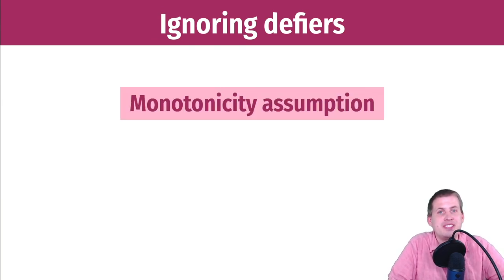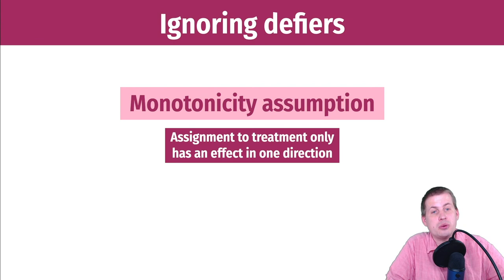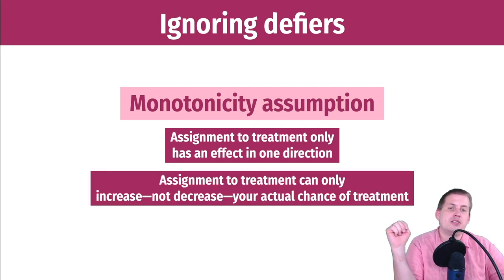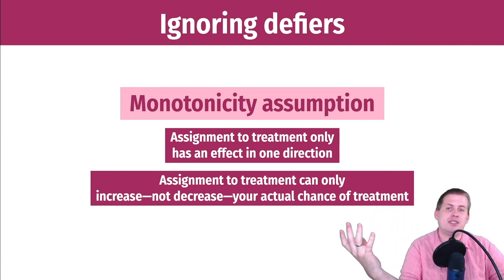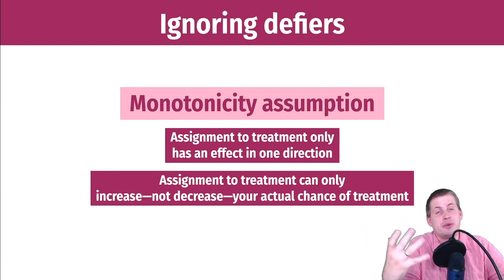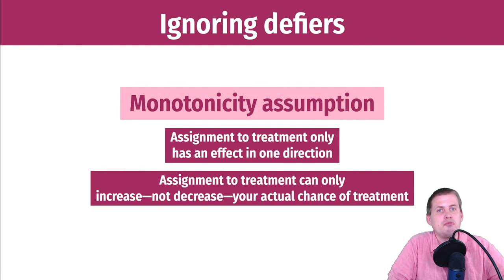There's a more technical reason for ignoring defiers called the monotonicity assumption. This means that if you are assigned to treatment, it only has an effect in one direction — being assigned to treatment will always increase your chance of actually receiving the treatment, never decrease it. Because of this, we can ignore defiers; they might exist in real life but it's going to be really hard for them to show up in any results.